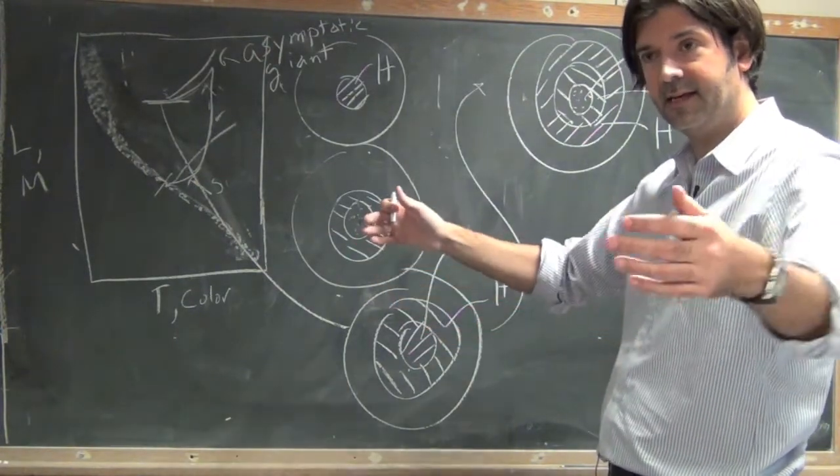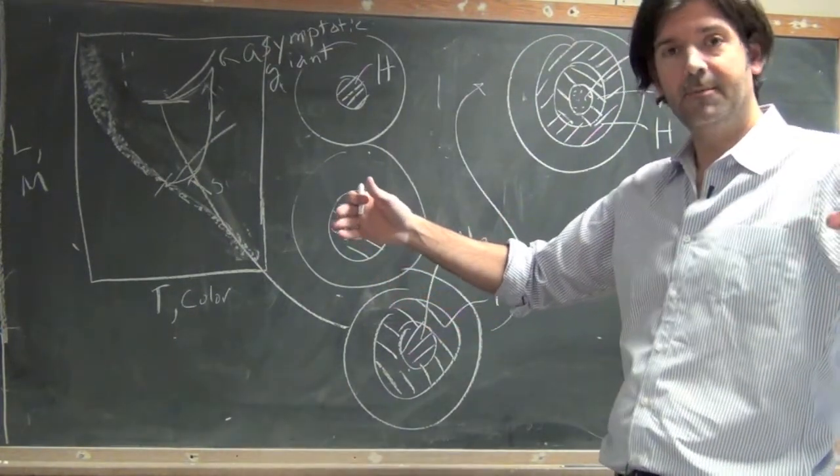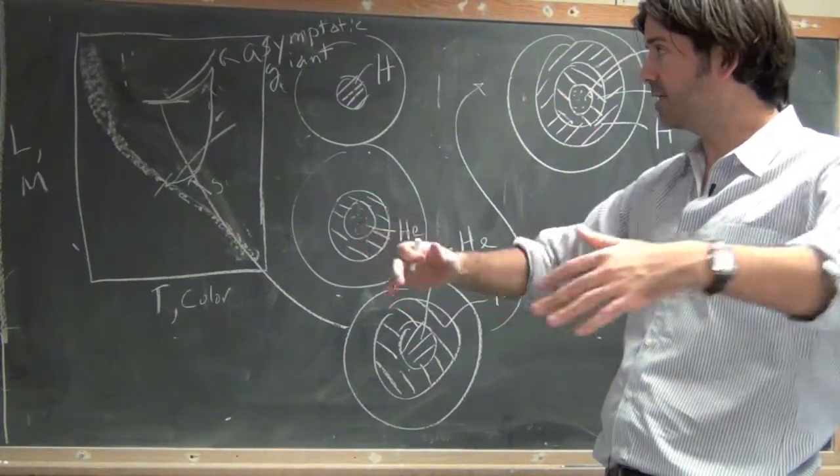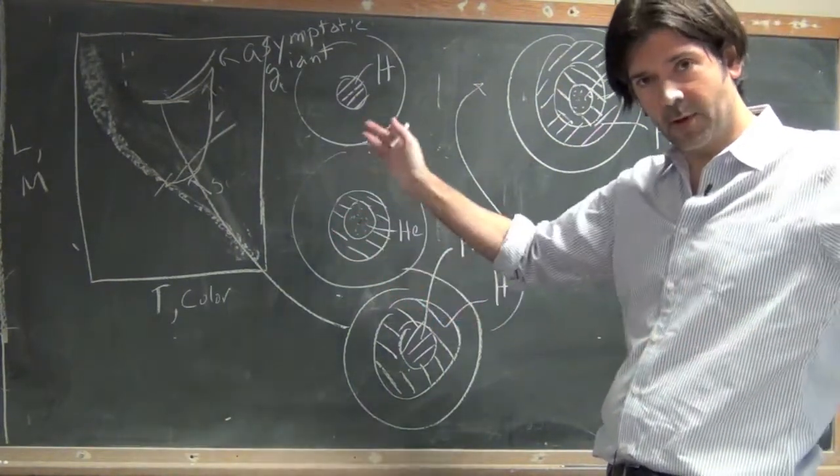So the star will undergo oscillations, expanding, contracting, expanding, contracting, until the burning decreases, then contracts, increases the burning, and so on. So these oscillations occur until you finally throw off the outer material.